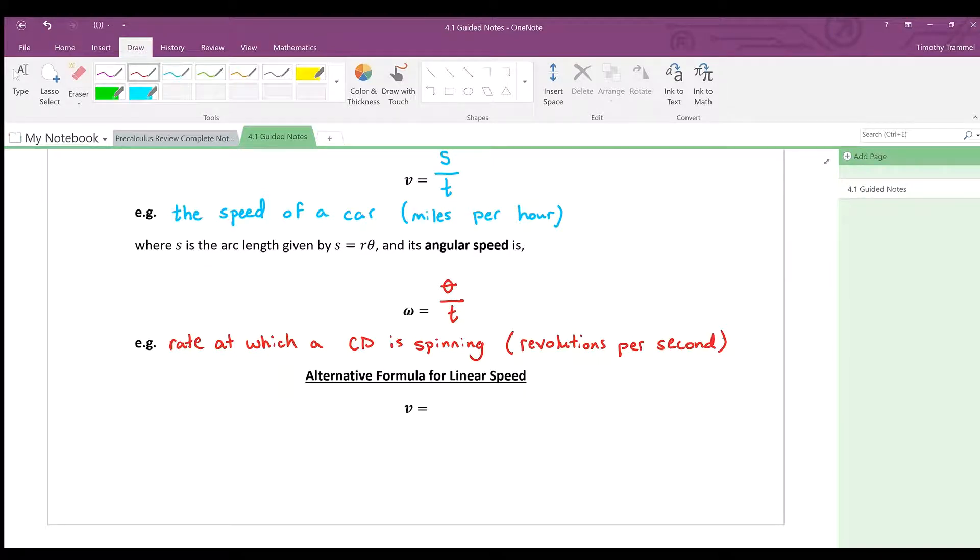Now we have just one more formula: an alternative formula for linear speed. We know that V equals S over T, and we also know that S equals r times θ. I can rewrite this as r over 1 times θ over T. That θ over T should look familiar—if I look right up here, θ over T is equal to ω. So all we're left with here is r times ω, so this formula is V equals rω.